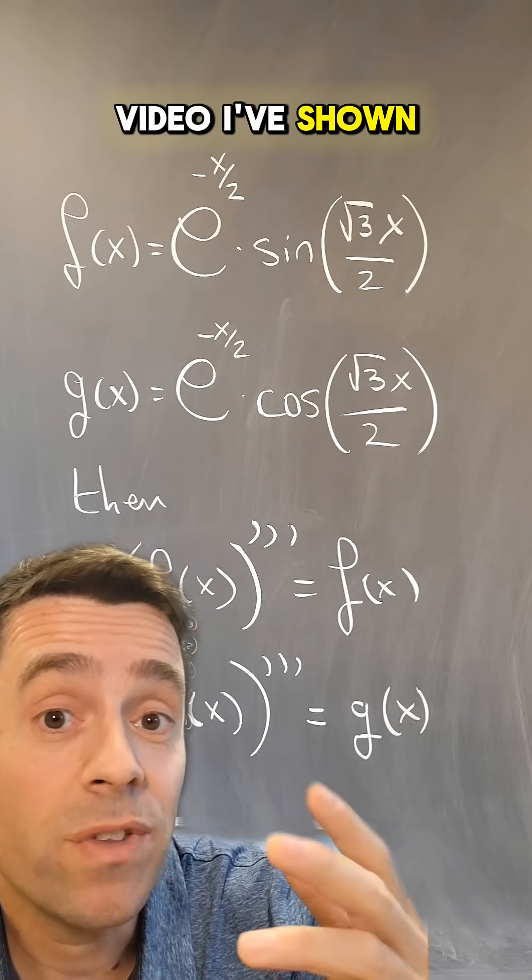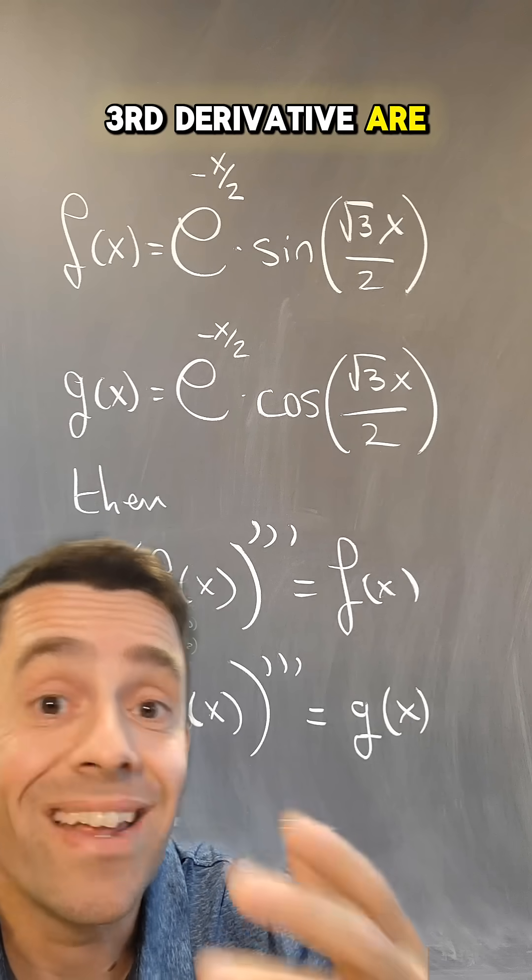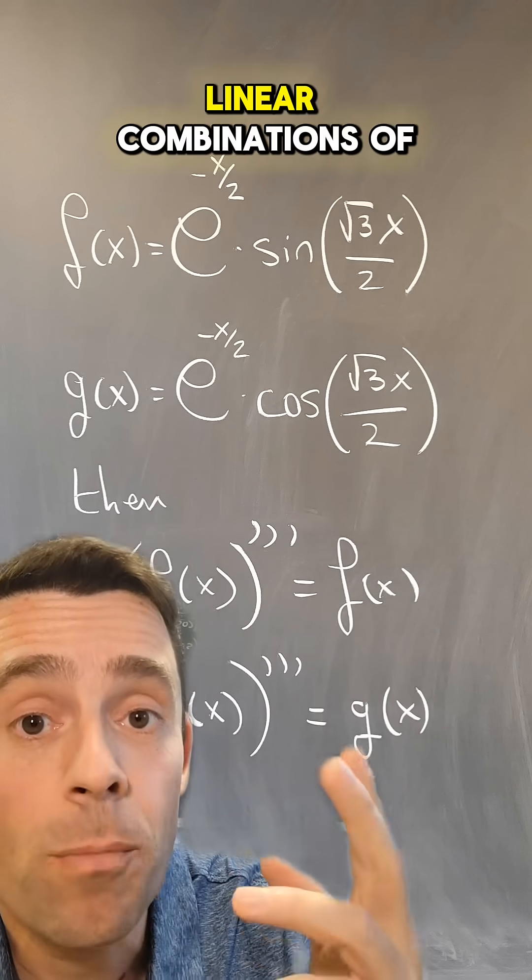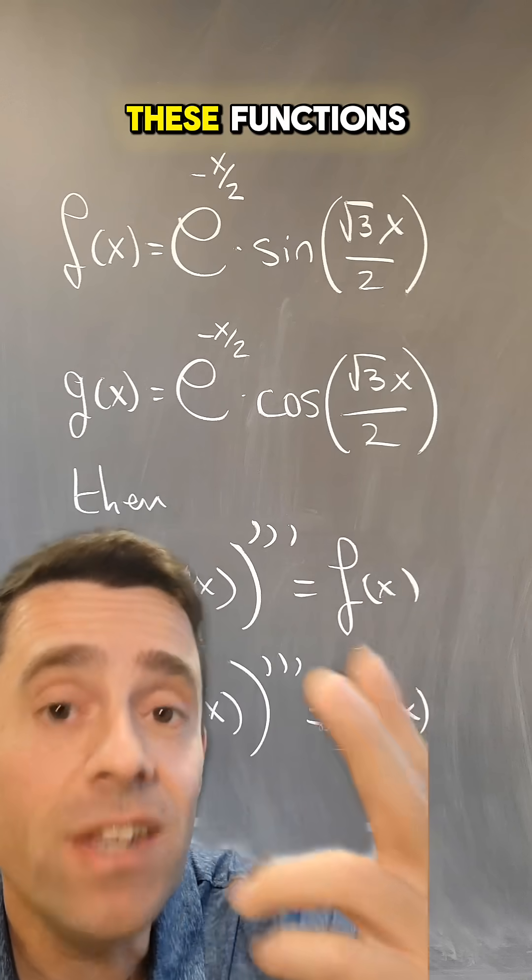In a previous video, I've shown that the functions that are equal to their third derivative are essentially e to the x and one of these two functions and then the linear combinations of those three. What name should we give to these functions?